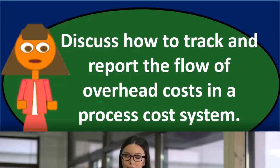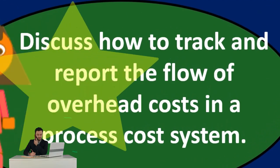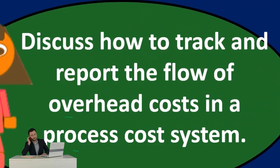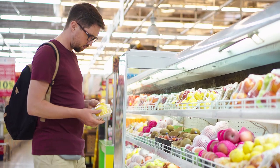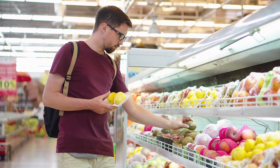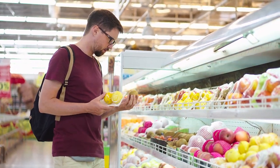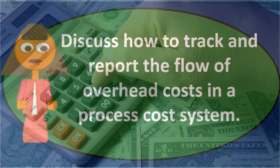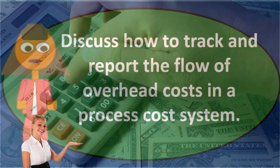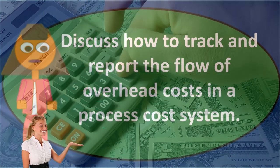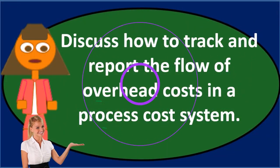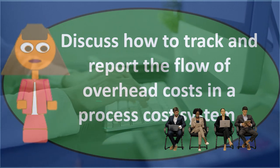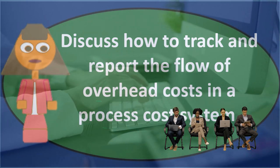If there is any over- or under-applied overhead, we adjust the overhead account to zero — since it's just an estimate. If we need to debit the overhead account to zero it out, we credit cost of goods sold, and vice versa. If the amount is material, we may need a more detailed system to apply the overhead to specific work-in-process accounts.